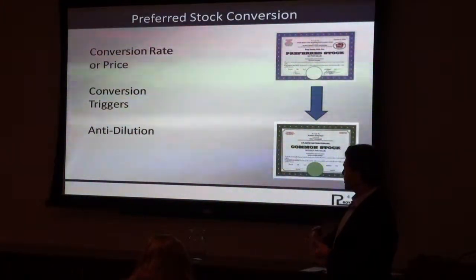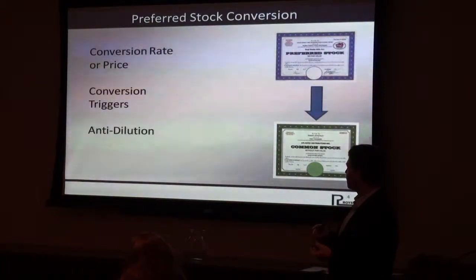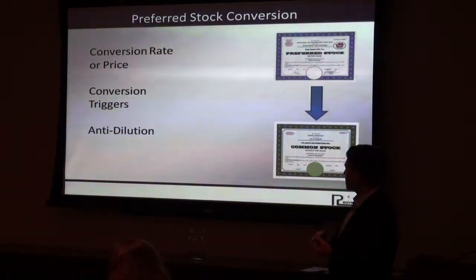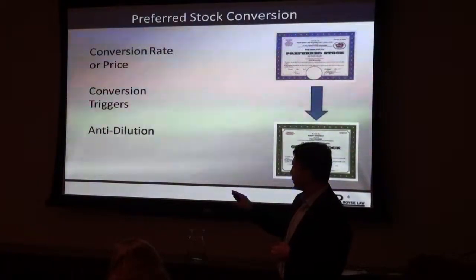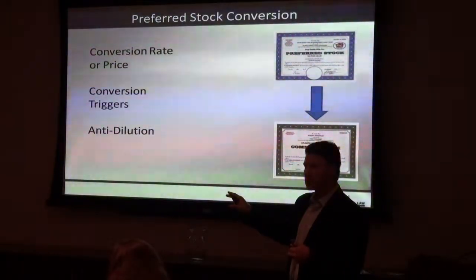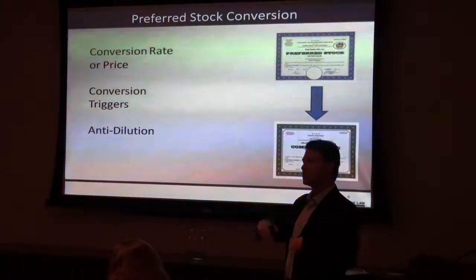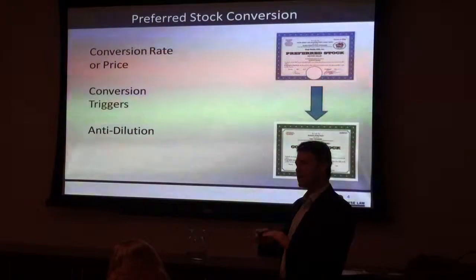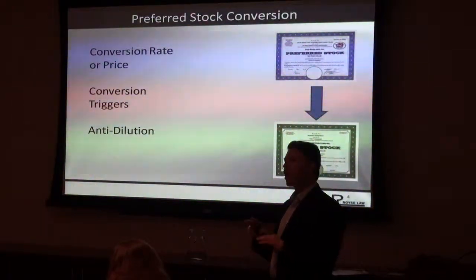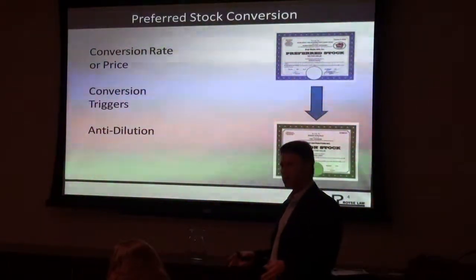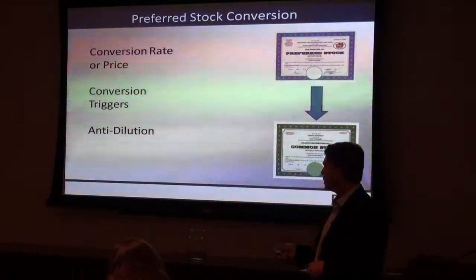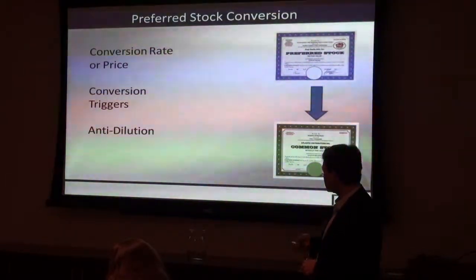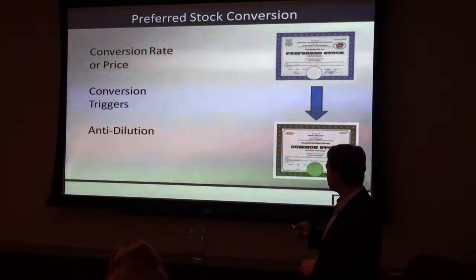Conversion triggers: IPO, consent of the majority. And anti-dilution — the basic one is when there are stock dividends and stock splits. That's always an anti-dilution adjustment. You can see how unfair it would be if it weren't. I'm going to talk about other anti-dilution adjustments in a little bit.